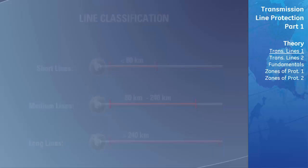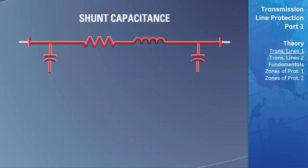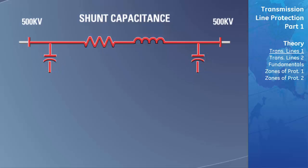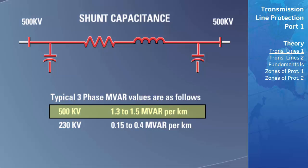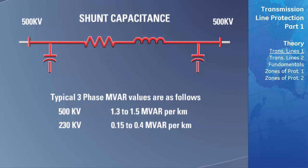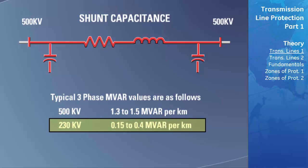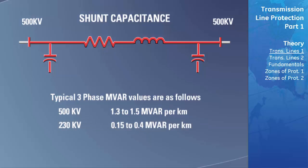Shunt capacitance occurs between the transmission lines and the ground. This capacitance counterbalances some of the inductance by adding leading MVARs on the line and helps bring the current and voltage back to unity power factor. Typical three-phase MVAR values are 1.3 to 1.5 megavars per kilometer for 500 kilovolt lines and 0.15 to 0.4 megavars per kilometer for 230 kilovolt lines.